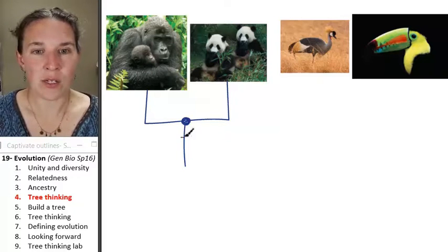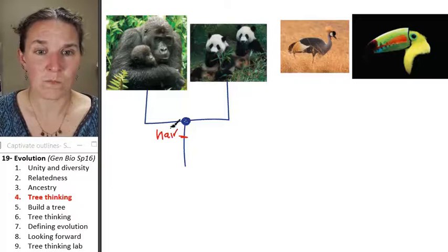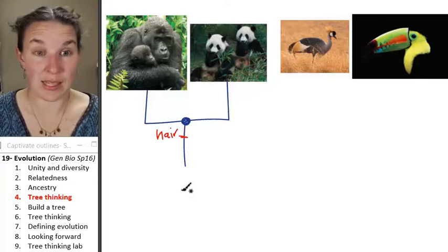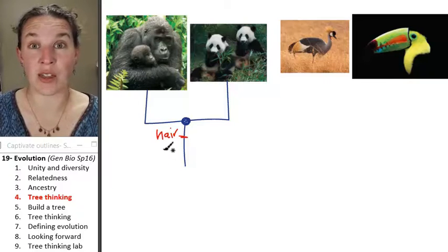But there are some characteristics that it probably had. And what do you think some of those might be? How about it had hair? Definitely. Like, that's a characteristic of mammals. In fact, all mammals share that characteristic.